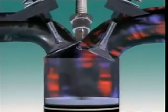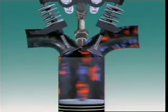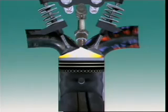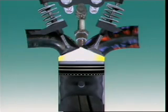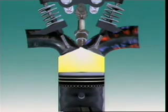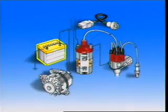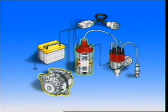The ignition system provides high intensity sparks at the spark plugs to ignite the fuel charges in the combustion chambers. The sparks must be supplied at the right time and they must have sufficient energy over a range of conditions to ignite the charges. The energy comes from the battery and alternator and the voltage is increased by the ignition coil.